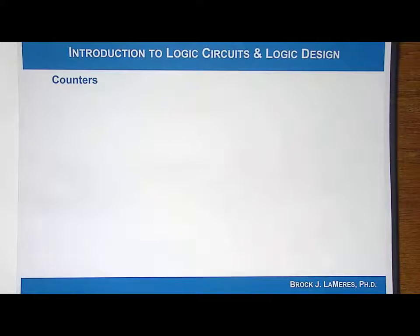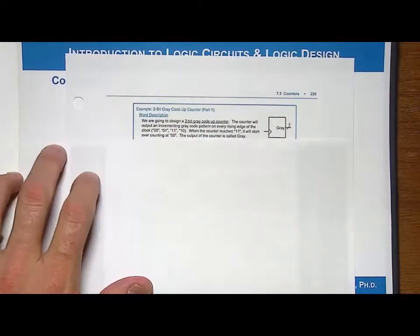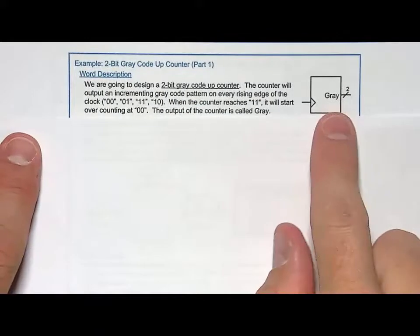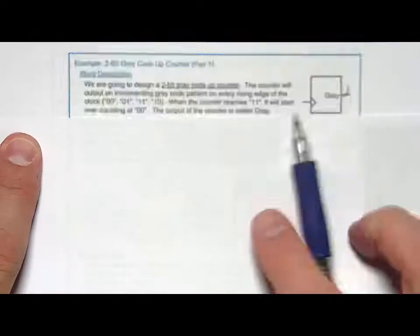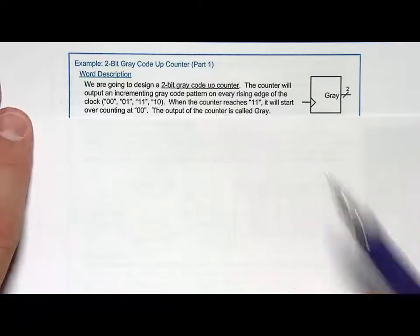So let's take a look at how we'd start this. We are going to follow the same design process that we've used on other counters. Let's look at the block diagram. We're going to have an output and let's call it gray, for gray code. And it's two bits wide and there's no inputs because it's just going to count up.